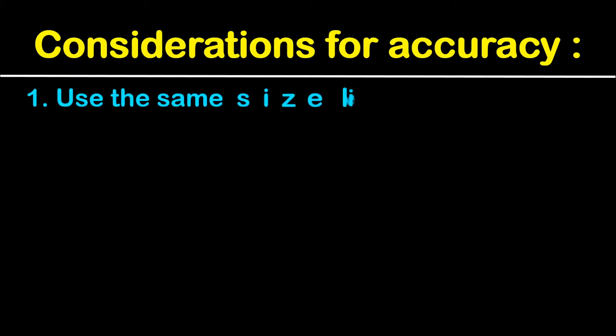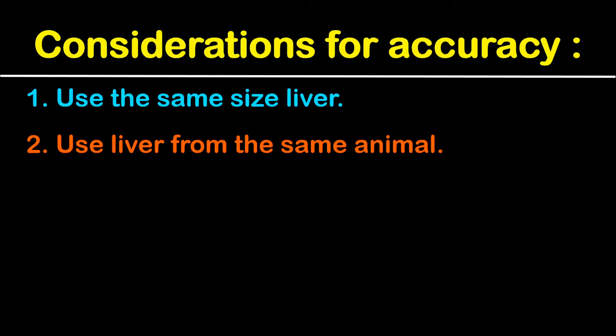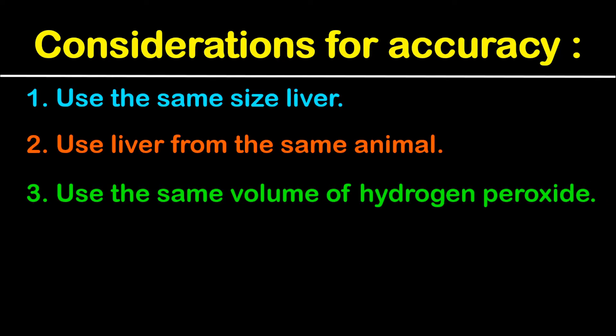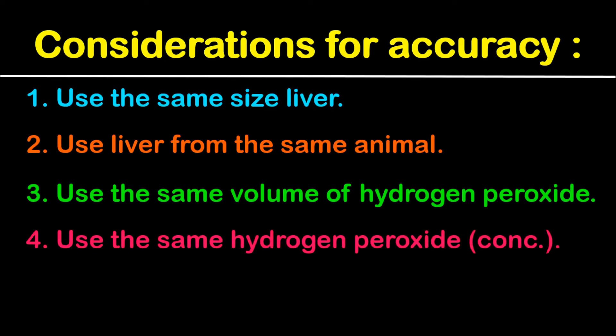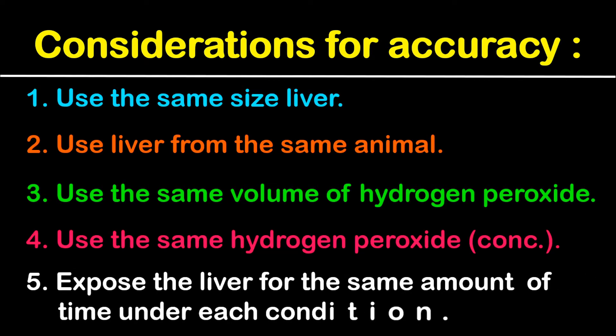Some considerations for accuracy include: one, the use of the same size liver (you can also measure it by mass if you choose). Use liver from the same animal. Also use the same volume of hydrogen peroxide. Use the same hydrogen peroxide because some may have different concentration or different percentage, so you want to maintain the concentration or percentage of the hydrogen peroxide. You also want to expose the liver for the same amount of time under each condition.